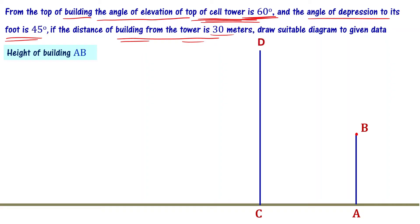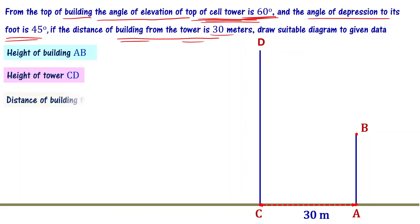Let us draw the cell tower CD, so the height of the cell tower is CD. The distance between the tower and the building — that is, the distance between points A and C — is 30 meters. Now we need to mark the angle of elevation equal to 60 degrees and the angle of depression equal to 45 degrees. The person is at position B, looking upward to D for the angle of elevation and looking downward to C for the angle of depression.